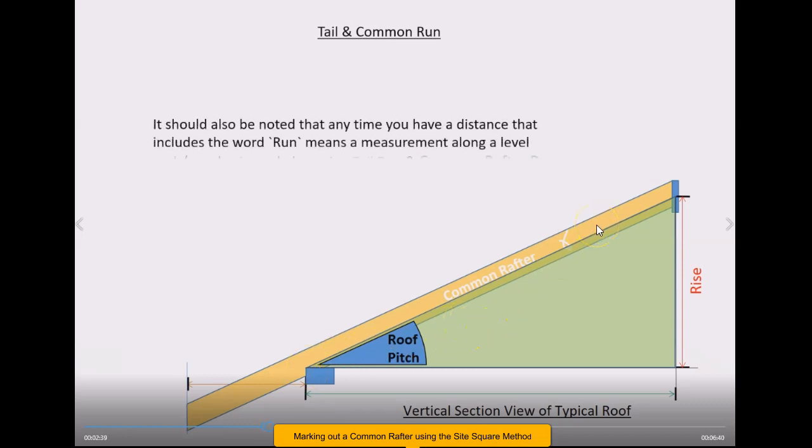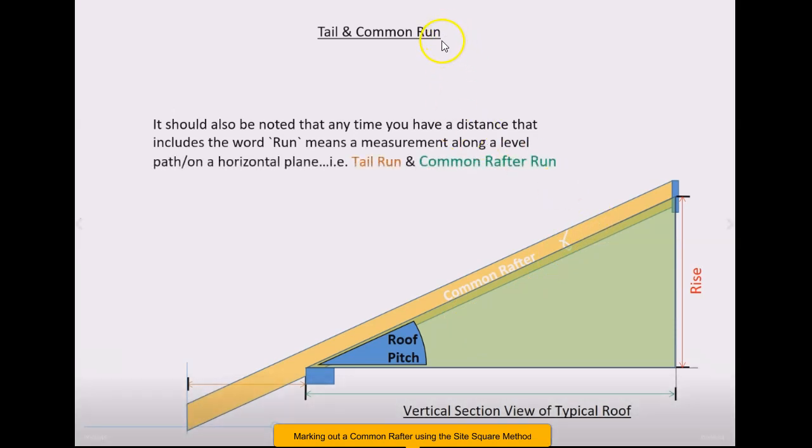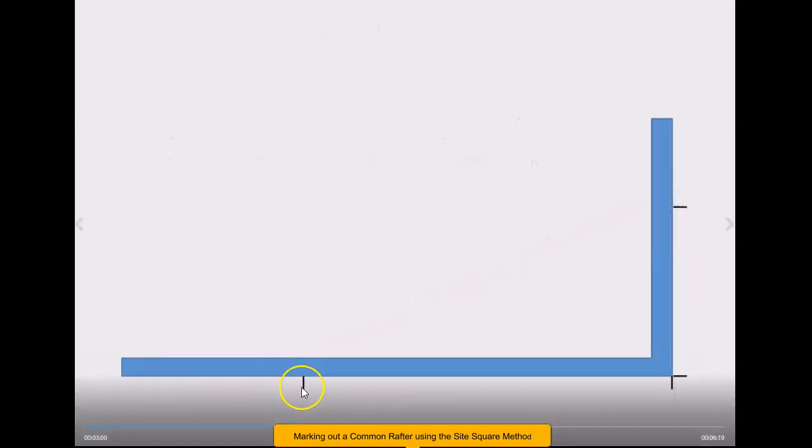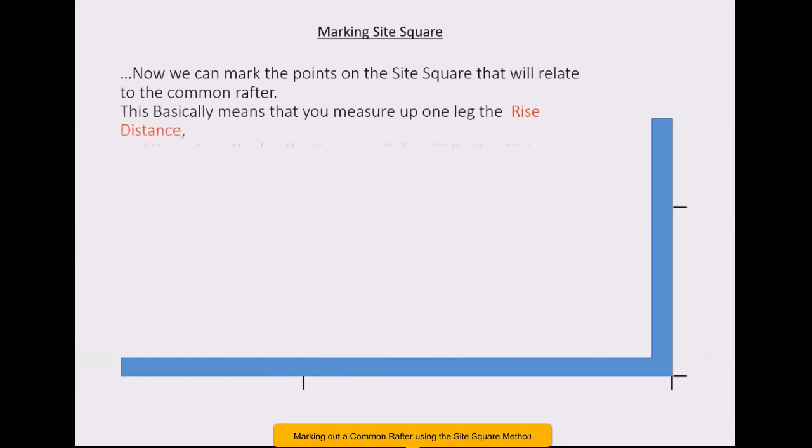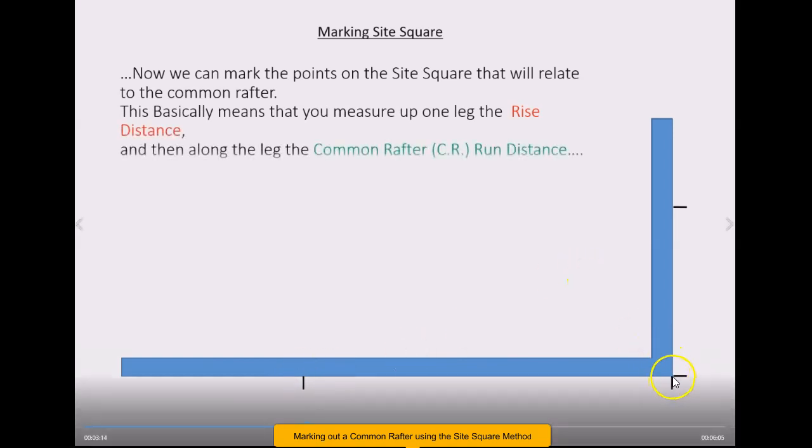Just bear that in mind when you're visualizing the right angle triangle when it's superimposed against a vertical section of a pitch roof, as is the case here. Now, often you hear the terms run, run, run. Run means a distance measured on the level plane, horizontal plane in other words. So in this case you have your common rafter run, which is on a horizontal plane, and here's your tail run distance again on a horizontal plane. Those are the planes you've measured along this longer leg of your square.